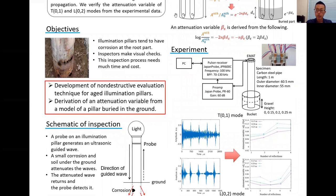Illumination pillars tend to have corrosion at the root part. The visual checks by inspectors need much time and cost.